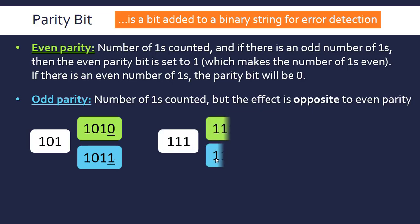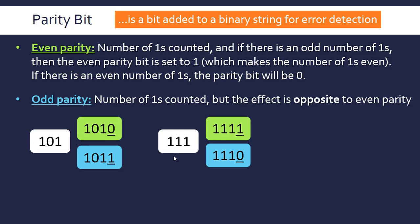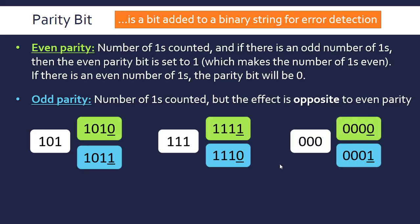For a second example, 111, we've got an odd number of ones. We want to make it even for even parity, so we add a 1 as our parity bit. We want to leave it as is for odd parity. If we had three zeros, there are zero ones. We leave it as 0 for even parity or make it a 1 for odd parity to make the number of ones be one. Clearly, if you have a parity bit, you need to increase the length of your binary string by one.